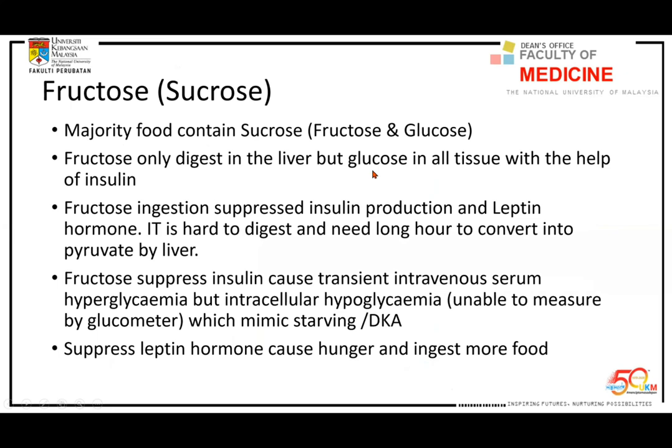So fructose suppresses insulin and leptin, creating metabolic syndrome. The patient looks well but their cells are starving because fructose prevents glucose from entering the cell — the cell reserve is low. This is why we talk about a glucose-insulin 'power bank cocktail.' Glucose combined with insulin is like a power bank for the cell — like charging a phone. Without this power bank cocktail, all five resuscitation steps — volume, cardiac contractility, vascular tone — will not work because the cell cannot react.